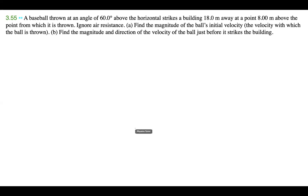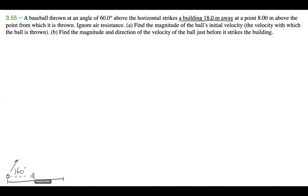Let's get started on a diagram. We have a baseball, and it's going to be thrown at an angle of 60 degrees above the horizontal. The building is 18 meters away, so this is 18 meters. We have some sort of building, and we know that the ball strikes a point 8 meters above where it was thrown, so this distance is 8 meters.